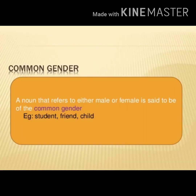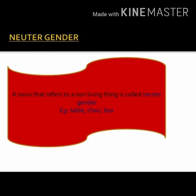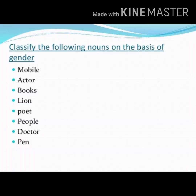A noun that refers to either male or female is said to be a common gender. For example, 'student' — we cannot tell if the student is a girl or a boy, so both are included, making it common gender. Our last gender is neuter gender — a noun that refers to a non-living thing is called neuter gender — for example, table, chair, box. I have given you words — mobile, actor, books, law, poet, people, doctor — classify them according to their gender.